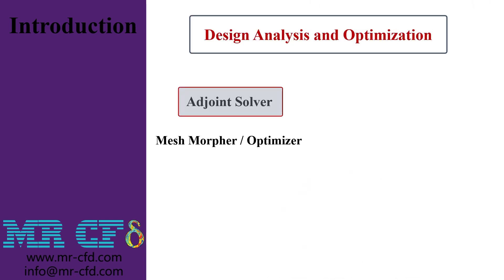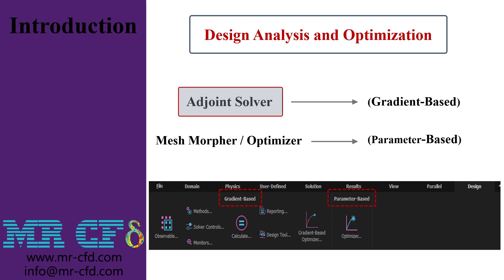In the first step, you need to know about the two concepts of adjoint solver and mesh morpher/optimizer. These are two features of ANSYS Fluent software that can change the mesh at the moment of simulation and perform the simulation process. For optimization with the help of Fluent, there are two different algorithms known as gradient-based and parameter-based. Both of these methods have the ability to change the mesh and perform the optimization process without having to return to the initial geometry. The adjoint solver is based on the gradient-based algorithm and the mesh morpher/optimizer is based on the parameter-based algorithm.